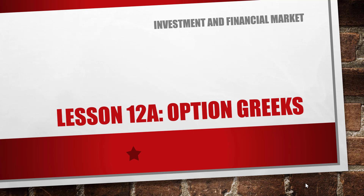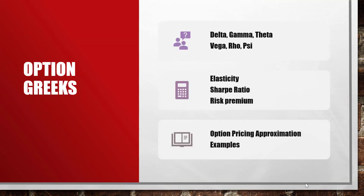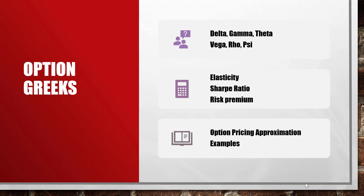Hi everyone, welcome back to my tutorial channel. Today we are going to talk about option Greeks. In this video I'll first introduce the six Greek letters: Delta, Gamma, Theta, Vega, Rho, and Psi. Then I'll talk about elasticity, Sharpe ratio, risk premium, option pricing approximation using option Greeks, and some examples.